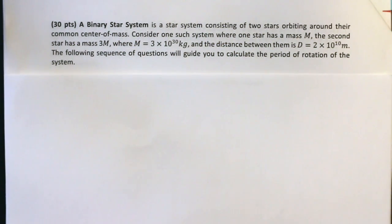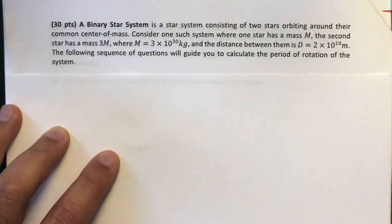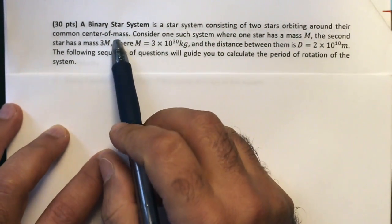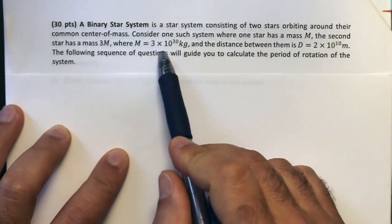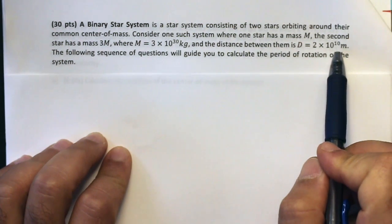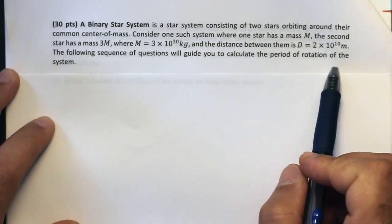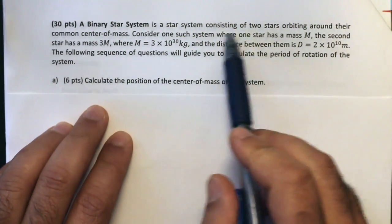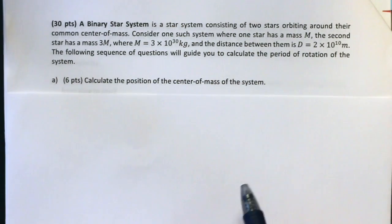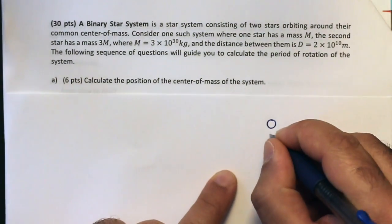This is a question about uniform circular motion. Pause and read the question — this is a binary star system, two stars orbiting their common center of mass. One has mass M, the second has three times that mass. The distance between them center-to-center is 2×10¹⁰ meters. The following sequence of questions will guide you to calculate the period of rotation of the system.